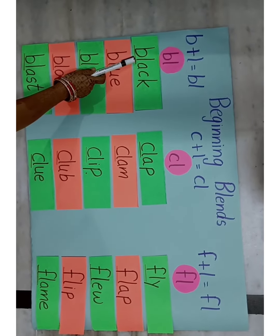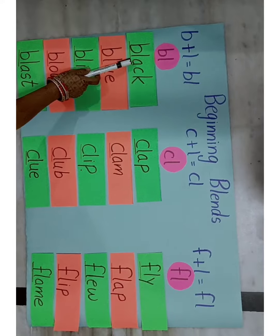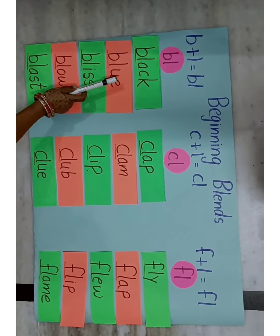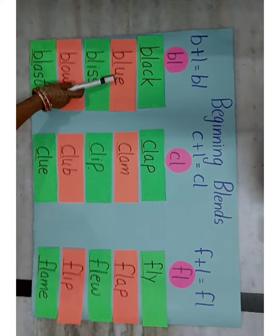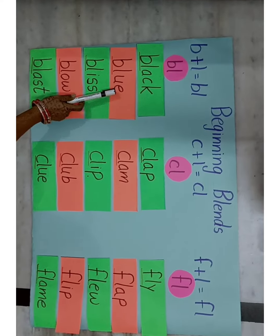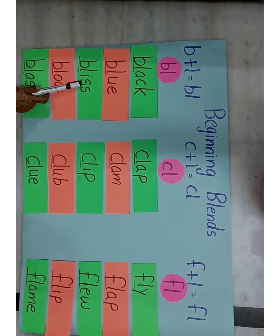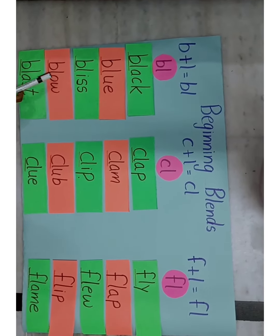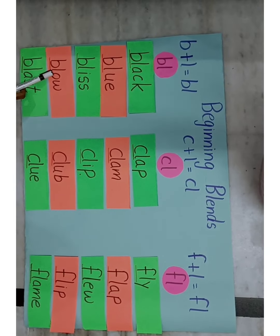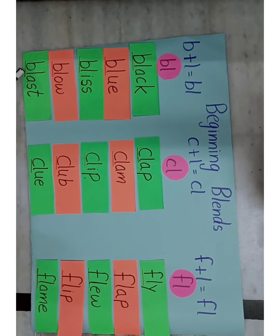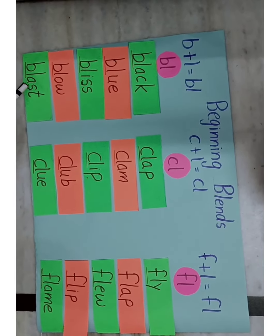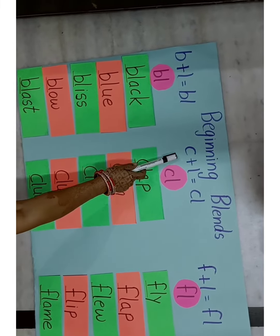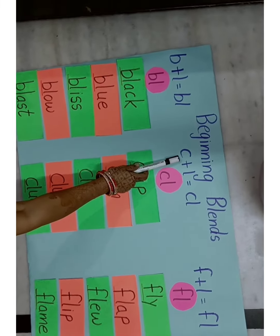We will read. BL - ack - Black. BL - ue - Blue. BL - iss - Bliss. BL - o - Blo. BL - ast - Blast. Now we will move to the next blend: C and L.